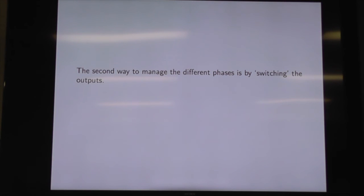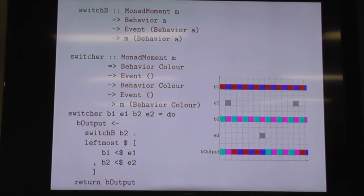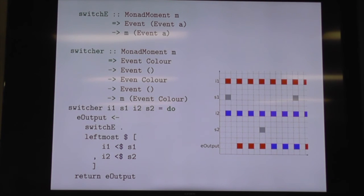The second way is a little bit trickier. This is a completely static event network, and we're just using those behaviours to wrap things around. The second way involves switching the outputs — this is actually rewiring the graph, changing an output to point somewhere else. If you're switching behaviours, you have an initial behaviour and then an event wrapped in behaviours. Every time that event fires, the payload of that event is the new behaviour, so you can switch backwards and forwards. In Reactive Banana, switchB doesn't have an initial value — you get nothing until the first event, and you don't get events at the same time point as the switching event.